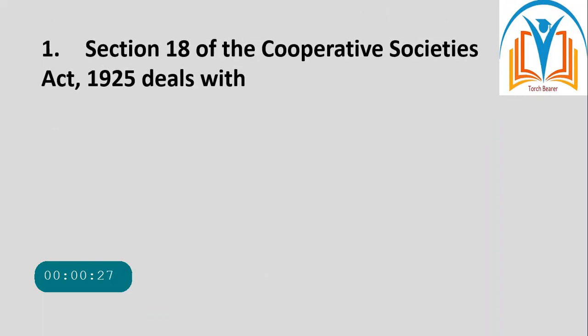Our first question is: Section 18 of the Cooperative Societies Act 1925 deals with — the answer is votes of members.